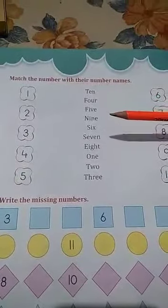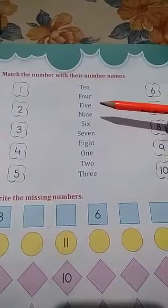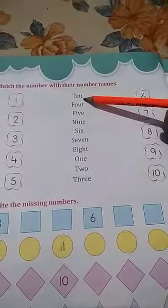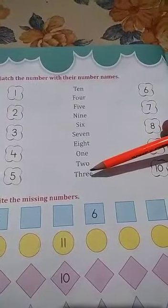Already we are finished number names 1 to 20 children. Here is a given number and here is a given number names. How to identify which number name is match the number.